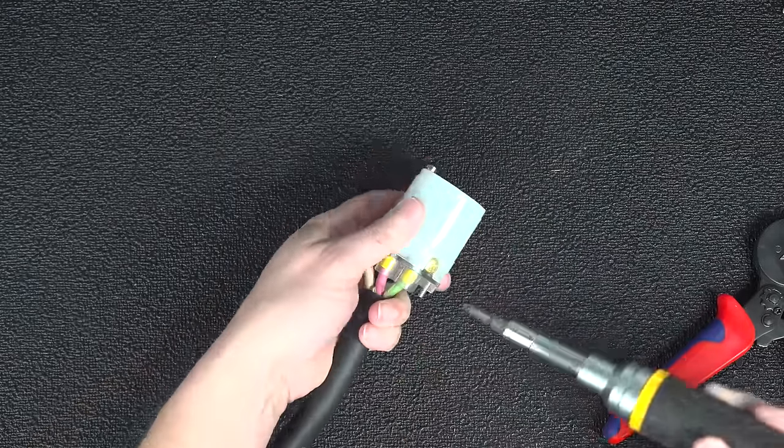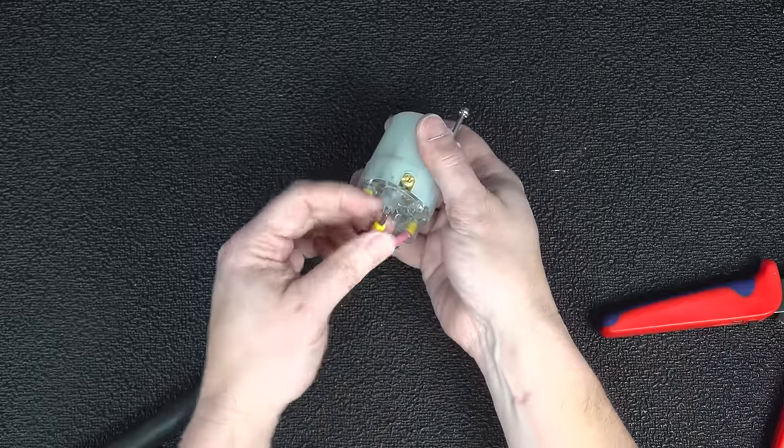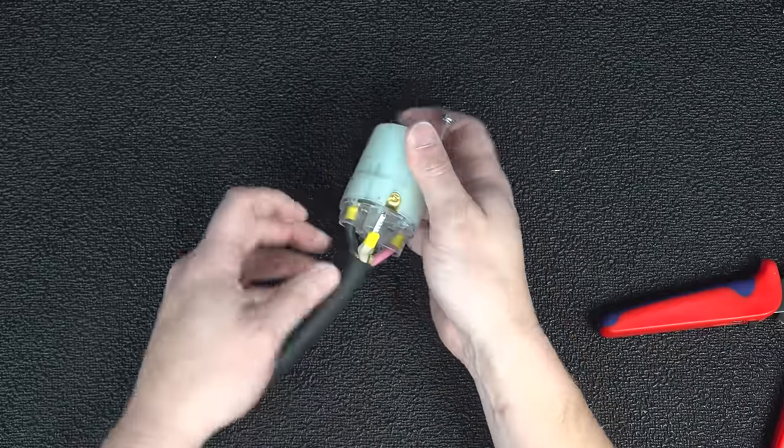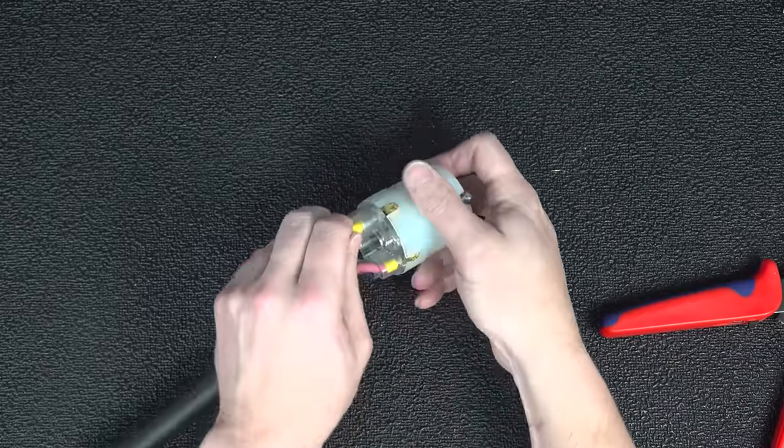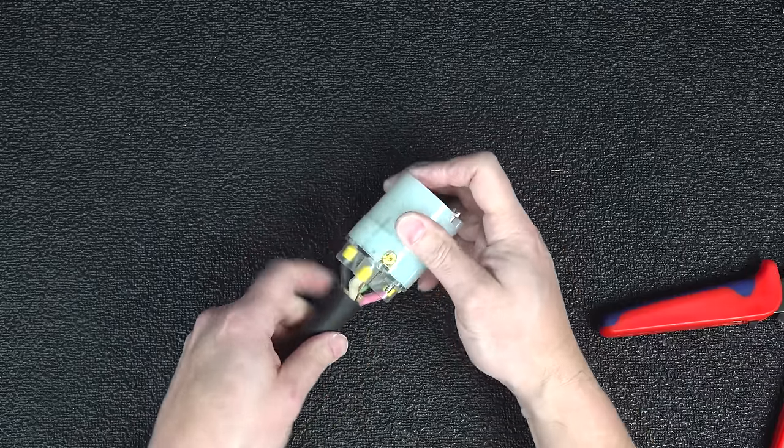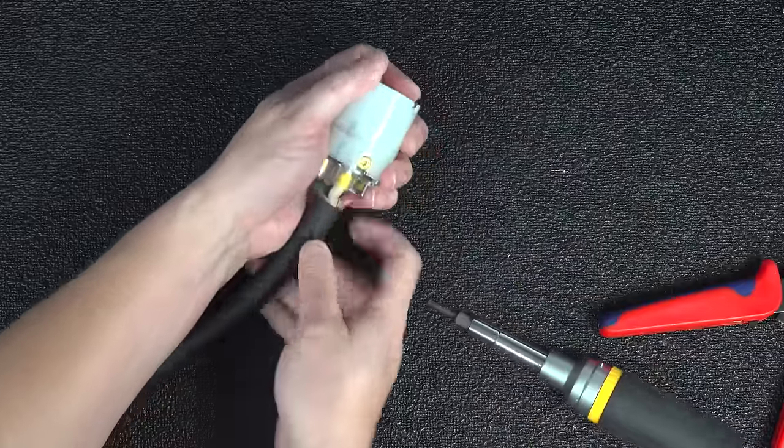All I've got to do is tighten down each one of the screws. Whether you're going to use the ferrules or raw wire, doing this does take some manipulation. You're going to need to work each one of the conductors in, but you want to make sure that they're in there all the way so that you're getting a good secure connection.